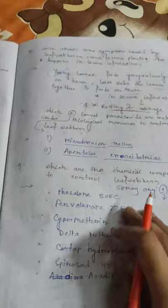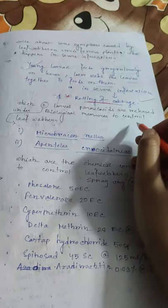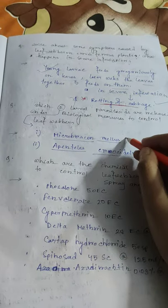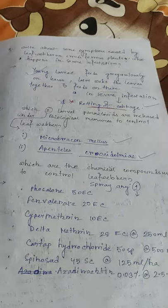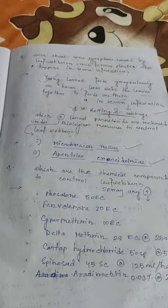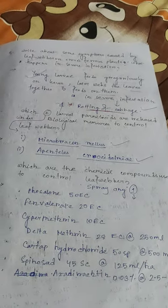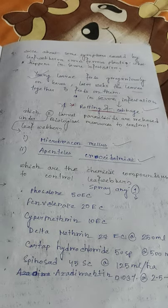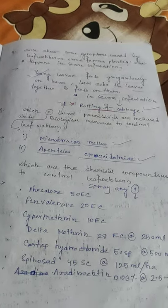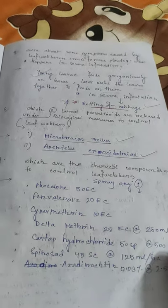Biological measures to control leaf webber: two larval parasitoids are released — Microdus melanopus and Apanteles crocidolomiae. These are larval parasitoids used to control leaf webber of cruciferous plants.